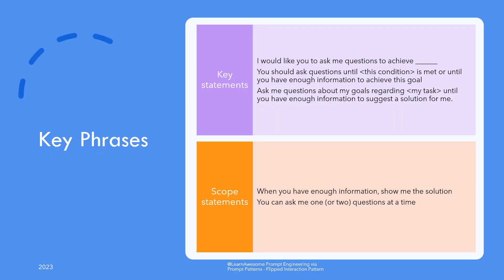The way to go about it is to instruct the model using key phrases like: 'I would like you to ask me questions to achieve my task.' You should ask questions until this condition is met, or to achieve this goal, or: 'Ask me questions about my goals regarding my task until you have enough information to suggest a solution for me.' Optionally you can scope the session with statements like 'when you have enough information show me the solution,' and begin by asking the first question, or ask questions one at a time or two at a time.